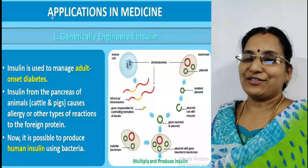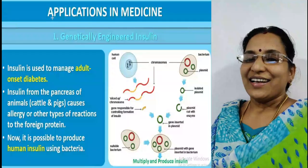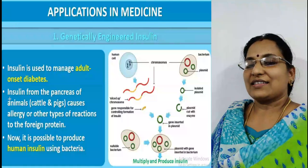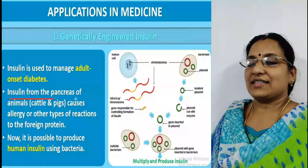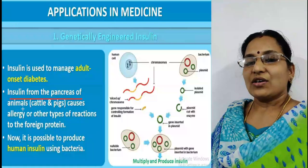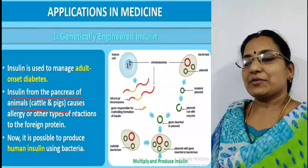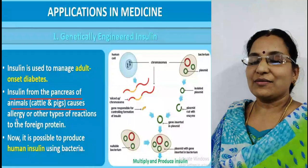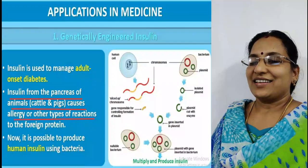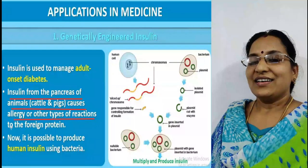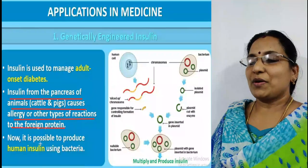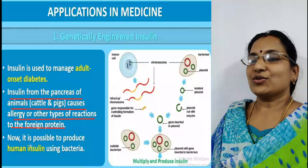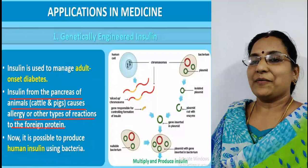Insulin from the pancreas of animals such as cattle and pigs causes allergy or other types of reactions due to the foreign protein. That is why human insulin is produced using bacteria through biotechnology.